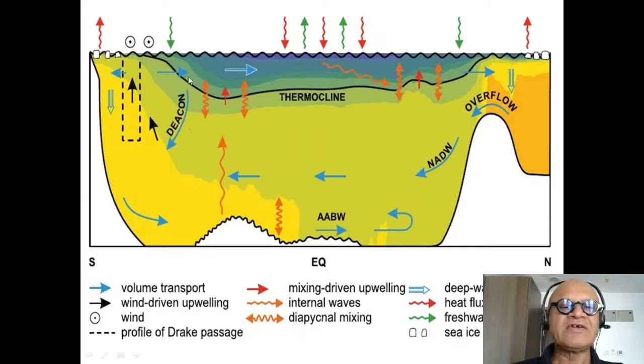There is a cell here that's called the Deacon cell, which we won't go into. And there is the Antarctic intermediate water. And there are all these mixing processes that have to obviously convert the heavier waters back to surface waters as we had argued before.